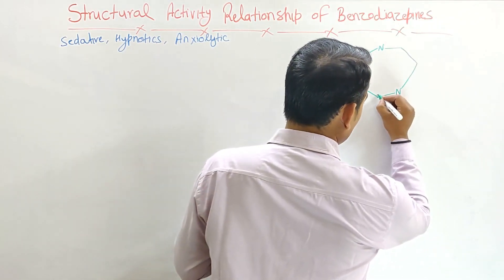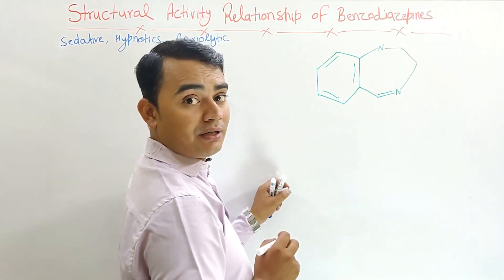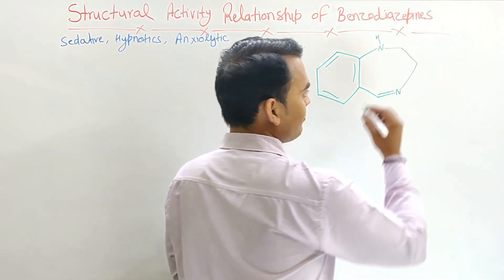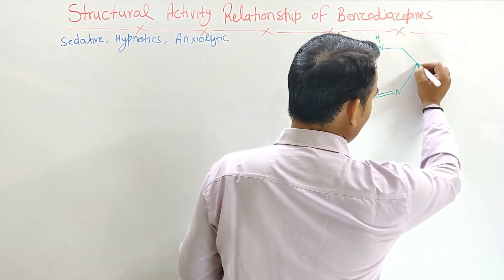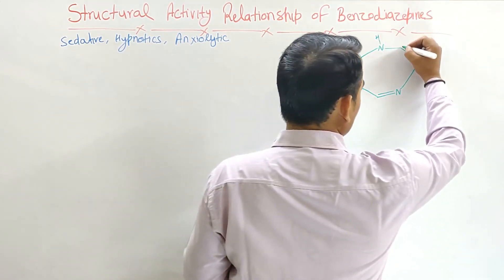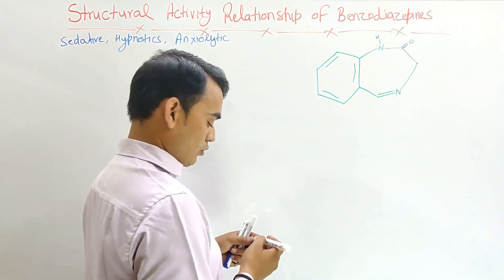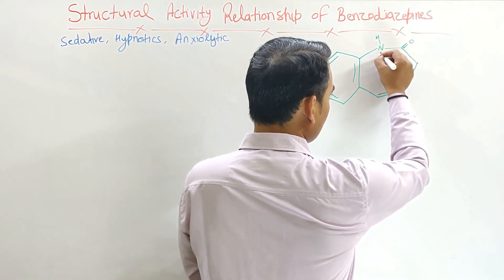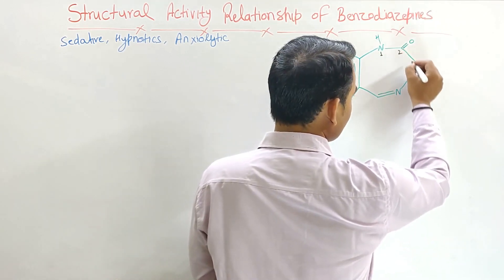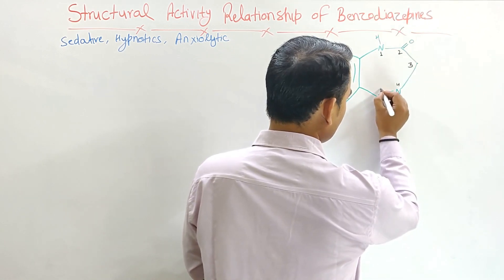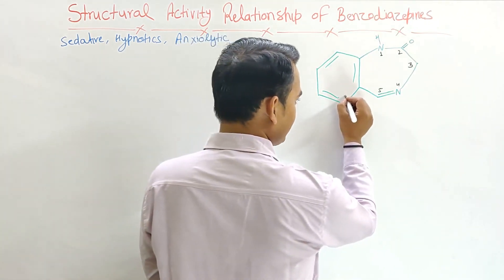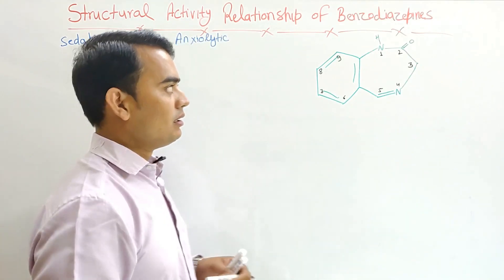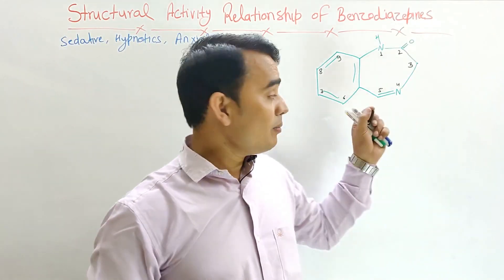The seven-member ring has unsaturation, and this position mainly has a hydrogen which can be any group. It only has the carbonyl group here. If you number it, numbering starts from the nitrogen: first, second, third, fourth, fifth — then continuing to the next ring: six, seven, eight, nine. This is the basic common structure of the benzodiazepine.